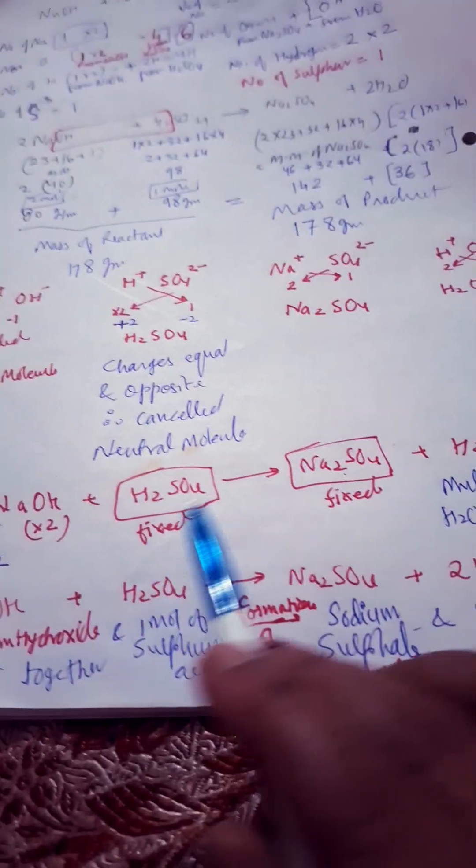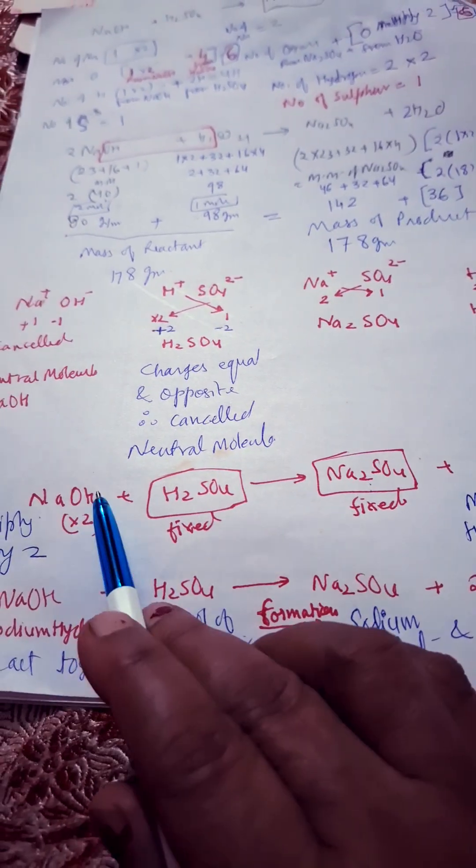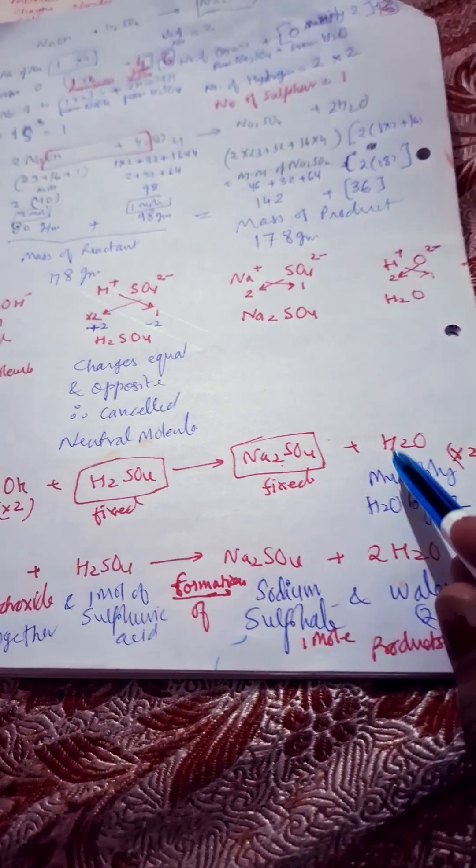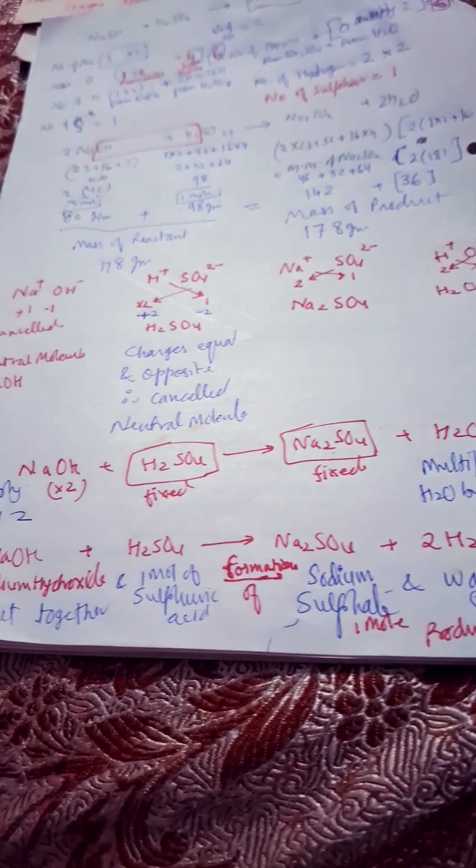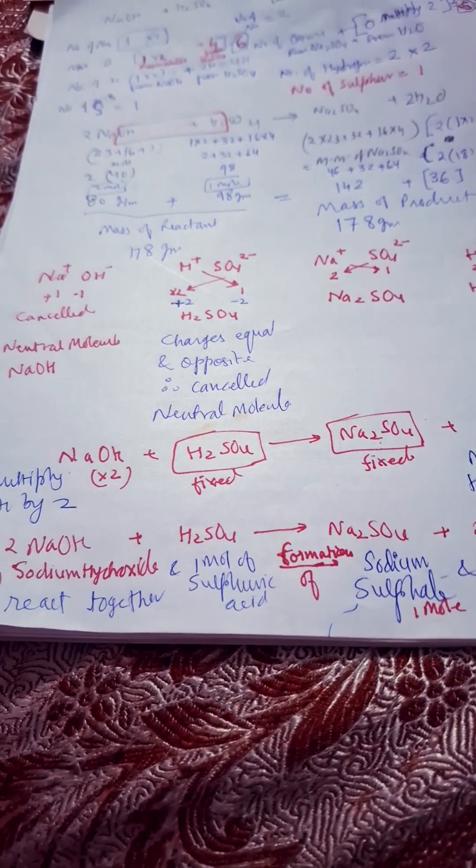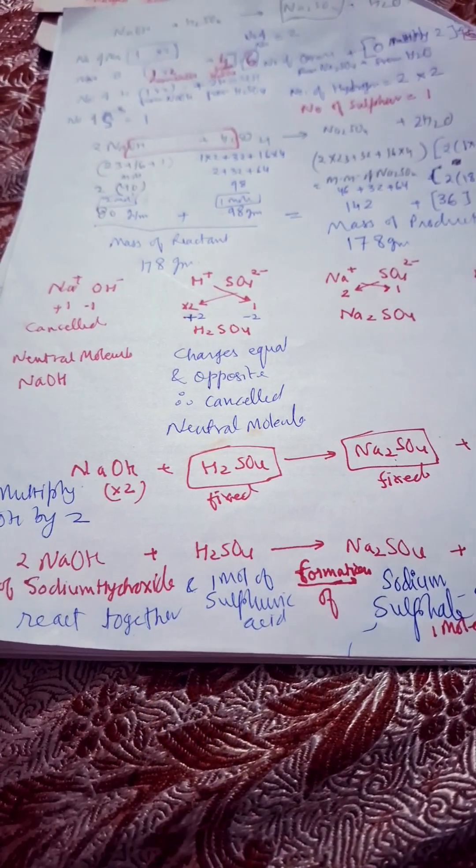And at that moment H is also two and O is also two. So here if we multiply water by two, you will get the complete balanced equation.